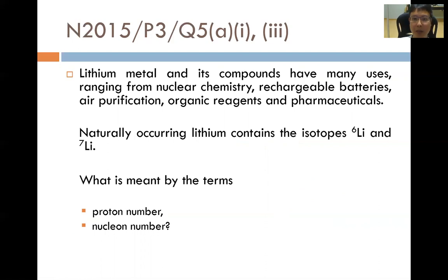Lithium metal and its compounds have many uses, ranging from nuclear chemistry, rechargeable batteries, air purification, organic reagents, and pharmaceuticals. Naturally occurring lithium contains both the isotopes lithium-6 and lithium-7. Just to remind you again on the definition for isotopes: isotopes are atoms of the same element with the same number of protons but different numbers of neutrons.